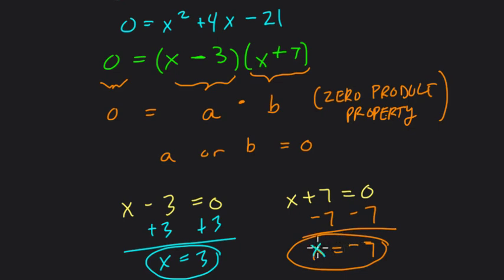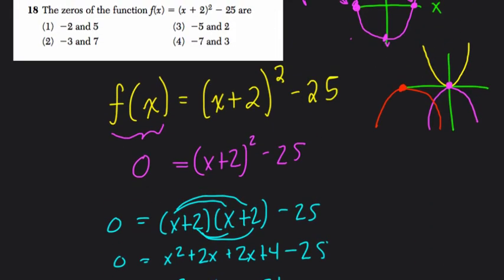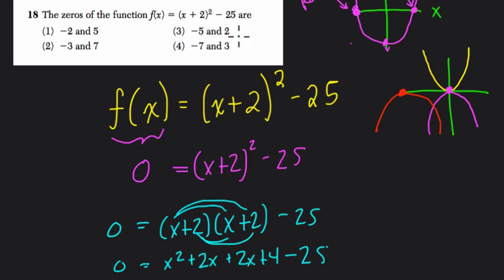Now they only want the zeros, they only want the x values. That's 3 and negative 7. You can see those are just the opposites of these terms right here, because opposites add to zero, and that would give us a number that's zero. So 3 and negative 7. Let's fill out, that's our answer. Let's find that. 3 and negative 7, choice 4. All right, hope that helps. Thank you.